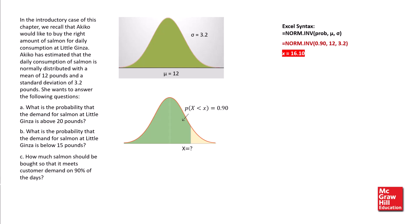We use the qnorm function in R to obtain the value of x. This function has the same three arguments, namely, the cumulative probability, the population mean, and the population standard deviation. Substituting these values into the function, respectively, we obtain the same value of x as 16.1.